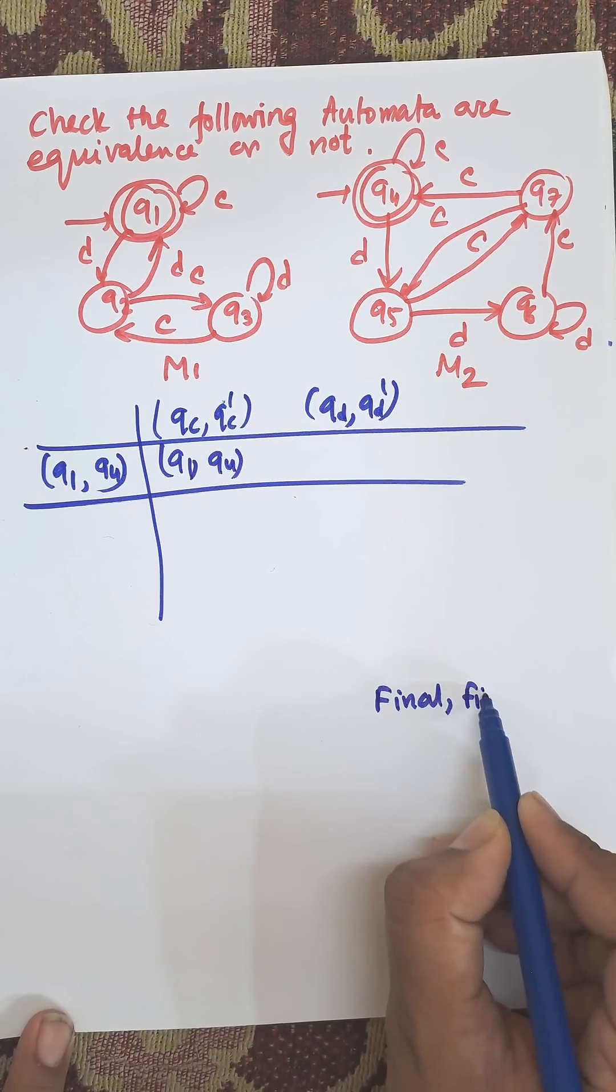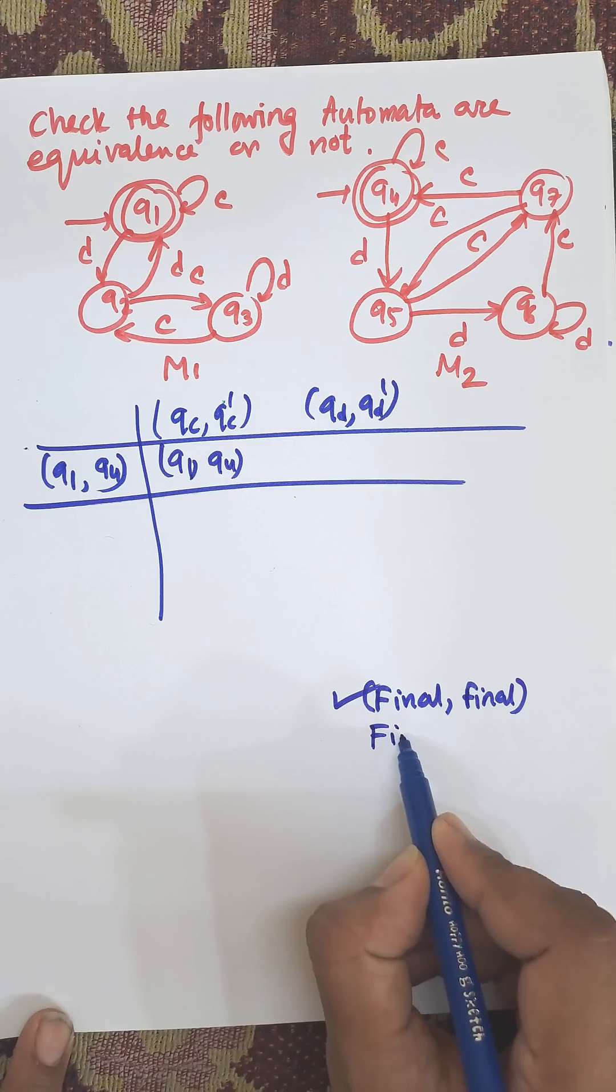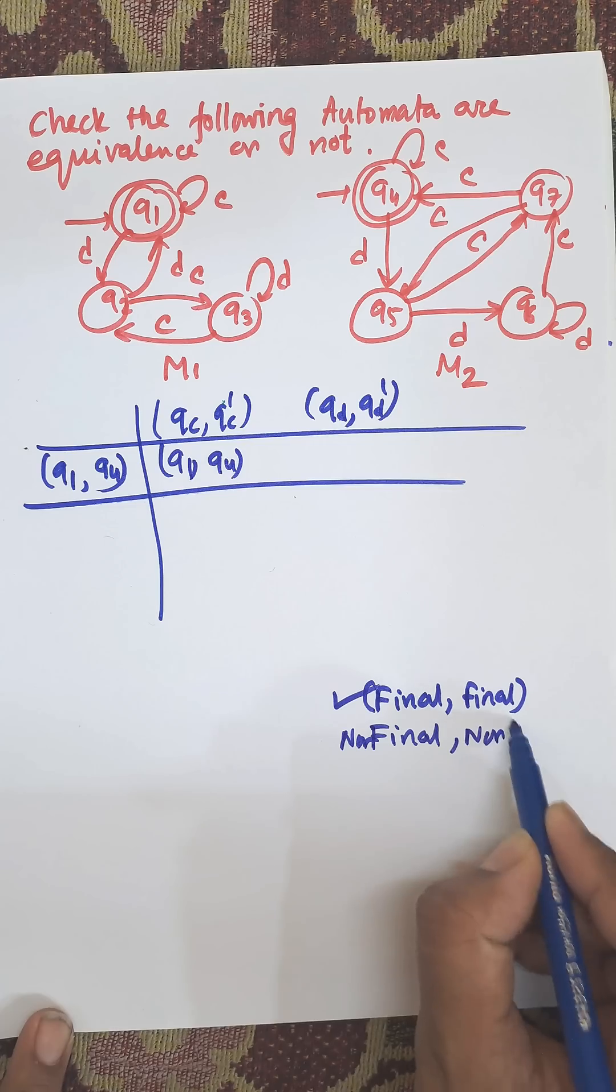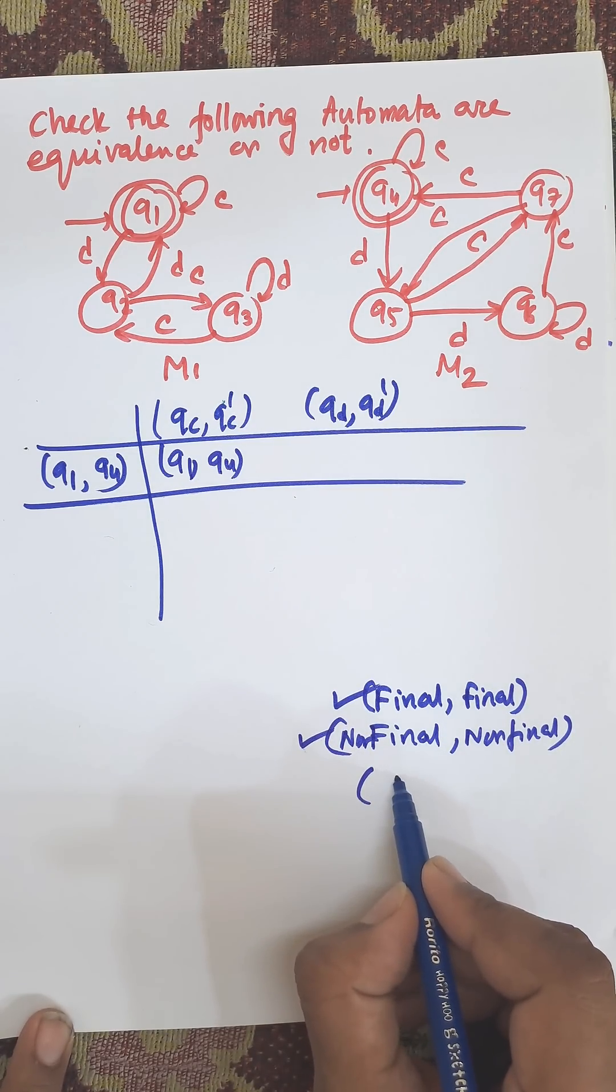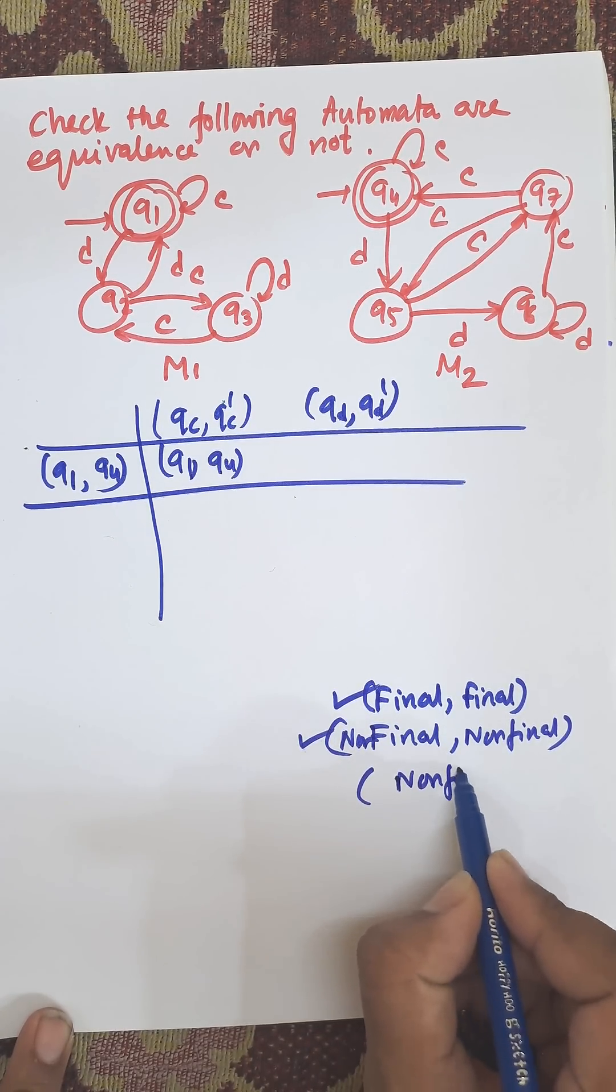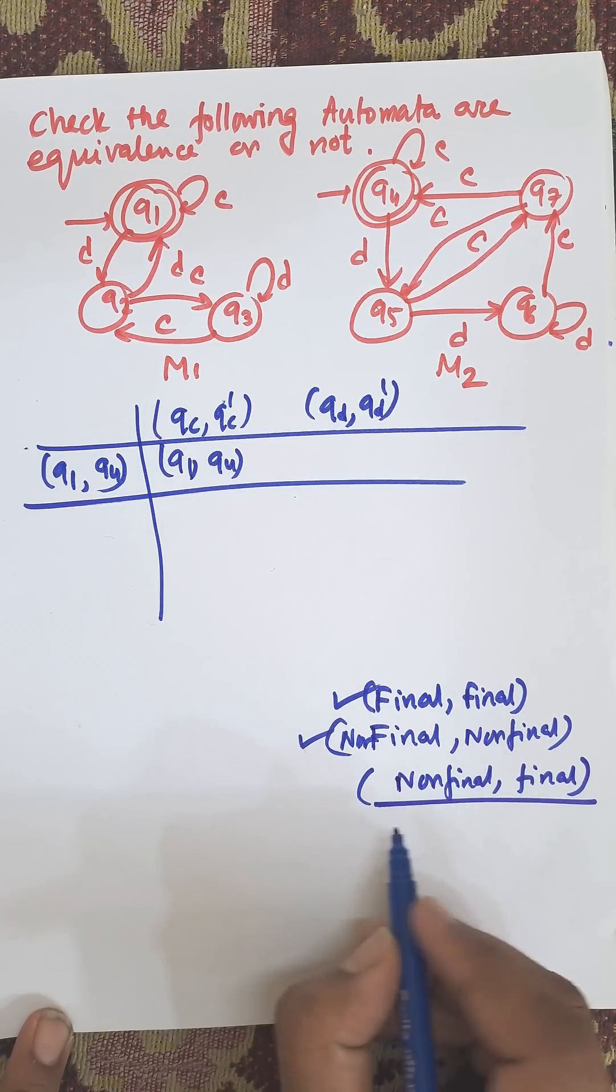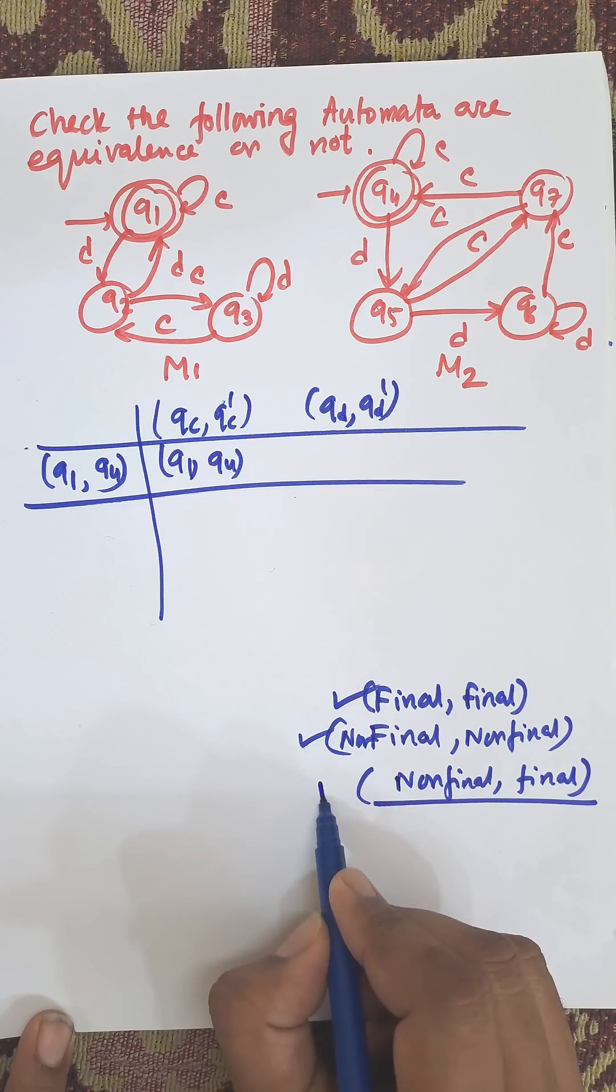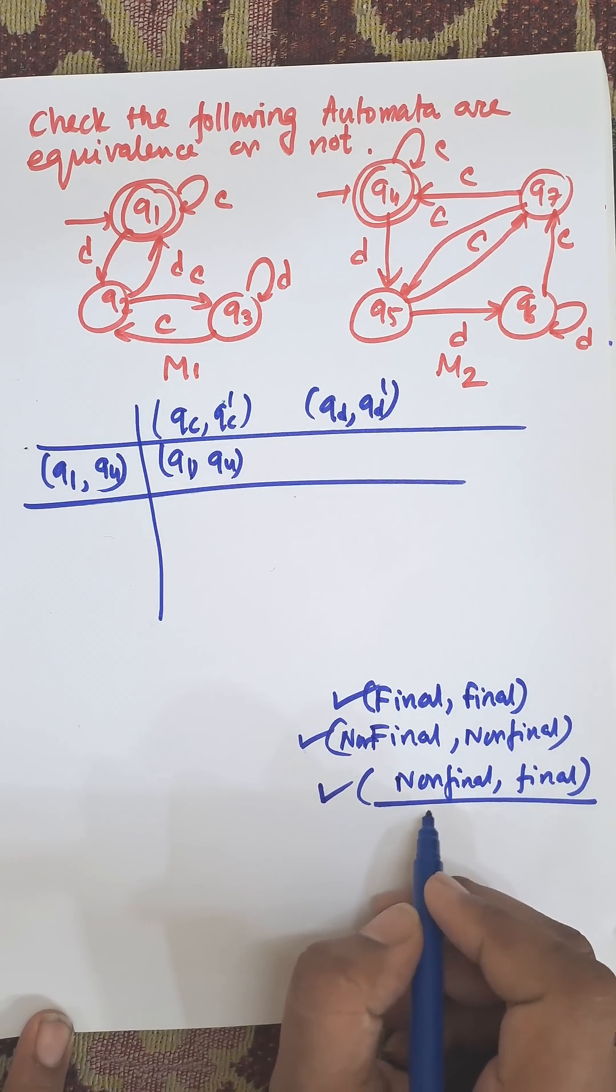Allowable sets are if one of them is final and another is final, then it is allowed. Final, non-final, non-final, non-final are allowed. But in case of any combination of non-final and final, then we can say they are not equal. This is the two allowable state, but this is not allowed. In this case, when there is any combination of non-final and final, then we can say they are not equivalent.